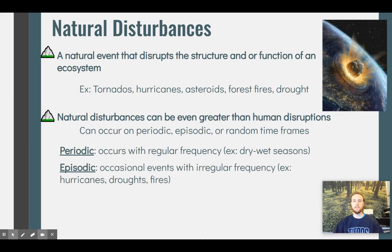Episodic events occur somewhat frequently, but not with a really regular interval — we can't necessarily predict exactly when they're going to happen, though there may be times of the year where they're more likely. Hurricanes, droughts, and fires are great examples. We expect more fires in California during the summer than in the winter, so we have some idea of the conditions that contribute to them, but we can't predict them with absolute certainty.